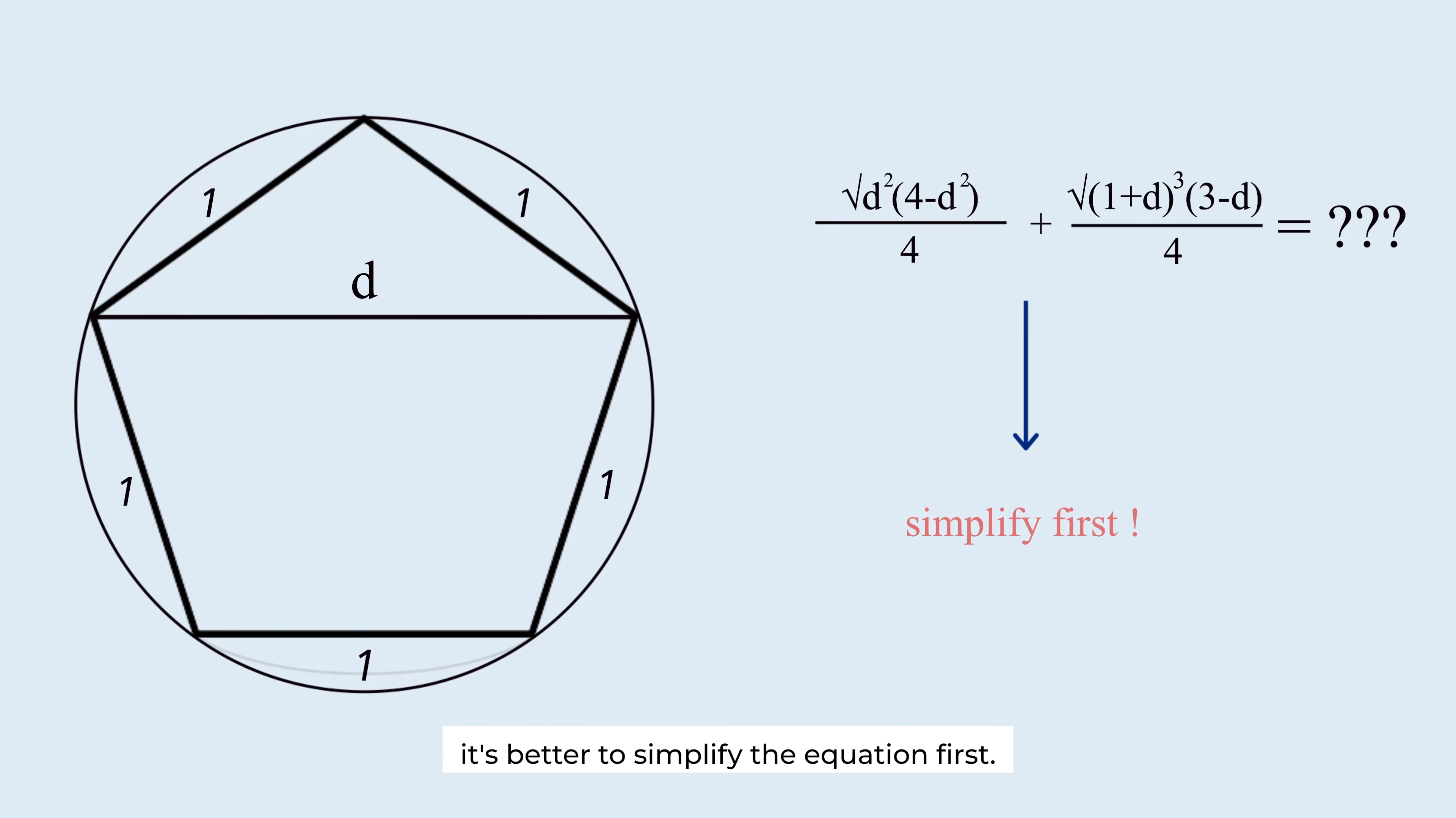It's better to simplify the equation first and then substitute the value of D. To do this, we can use this equation we obtained while finding the value of D. This equation can be rewritten like this. D squared is equal to D plus 1. The quadratic equation can be converted into the linear one.